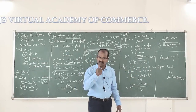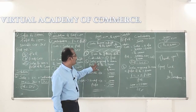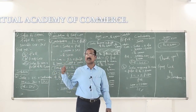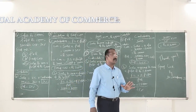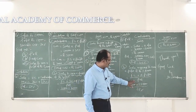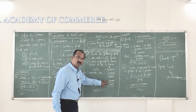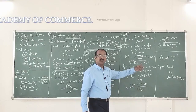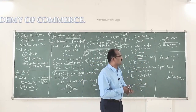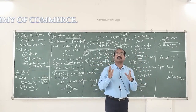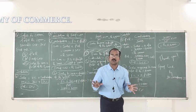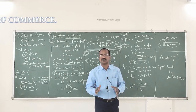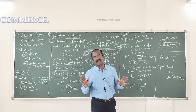Now for question B, we find the sales required to earn a profit of 2 lakh 80,000 rupees using the same formula: fixed cost plus desired profit, divided by PVR. Fixed cost is 30,000 rupees plus desired profit 2 lakh 80,000 rupees, the whole divided by PVR 25%. Simplifying: 3 lakh 10,000 divided by 25 into 100 gives 12 lakh 40,000 rupees. Therefore, if this concern makes a turnover of 12 lakh 40,000 rupees, it is likely to earn the targeted profit of 2 lakh 80,000 rupees.